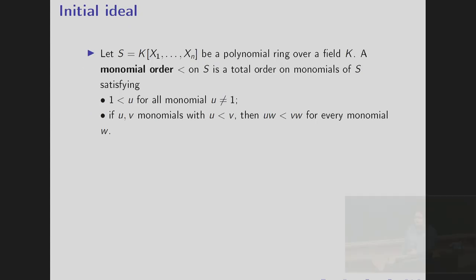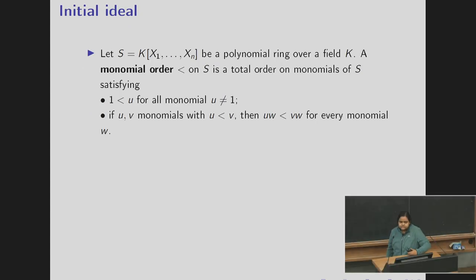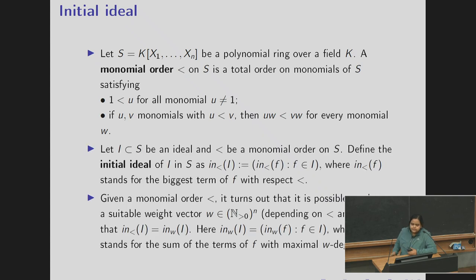Now we move on to the Gröbner deformation part. So let's quickly recall what is the monomial order. Let S be a polynomial ring over a field K. A monomial order is a total order which satisfies the two properties that 1 is the least element. And the second one says that the order respects multiplication by monomials.